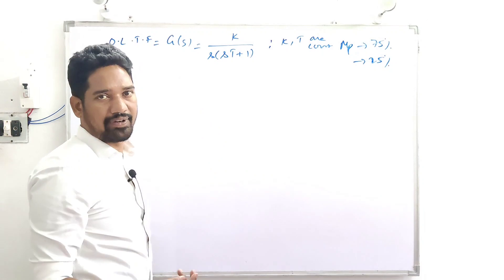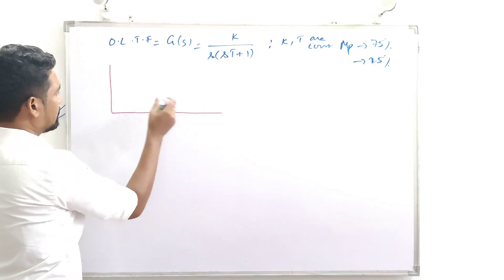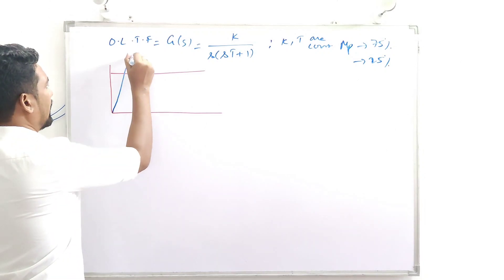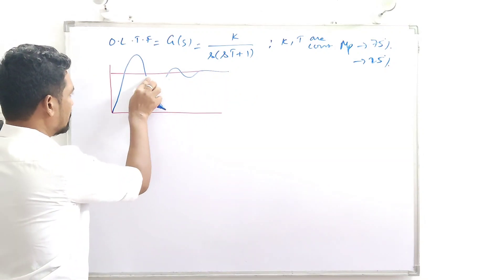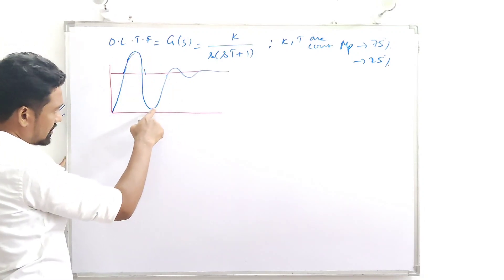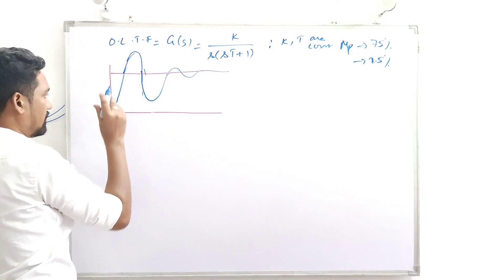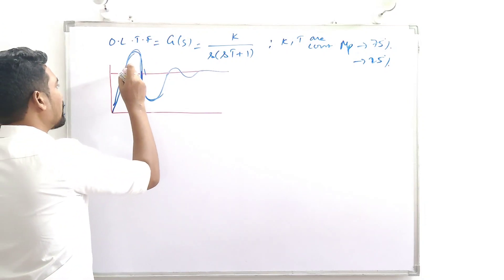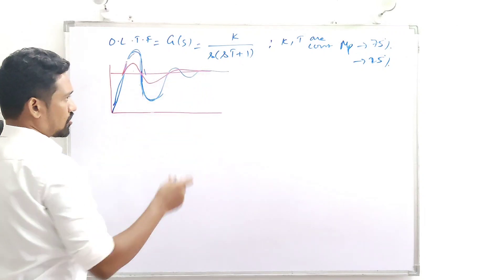This is a second-order system. The response of a second-order system for a step input starts from zero and reaches a final output. For example, if the swing is 100%, the overshoot is 75% as given in the question, and we need to reduce it to 25%.